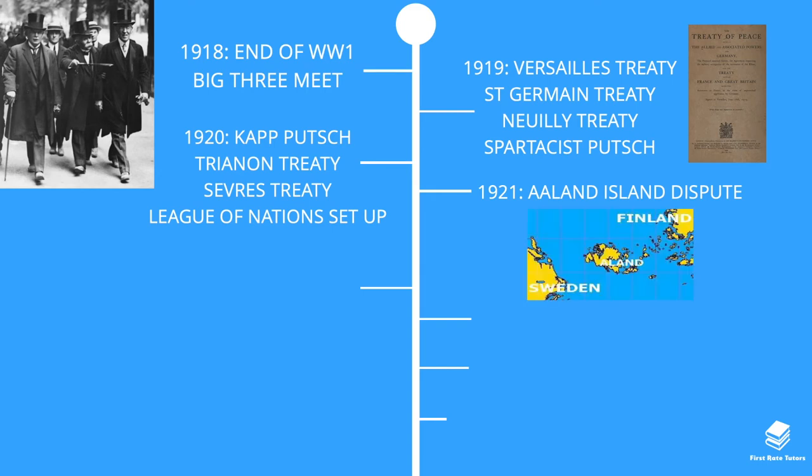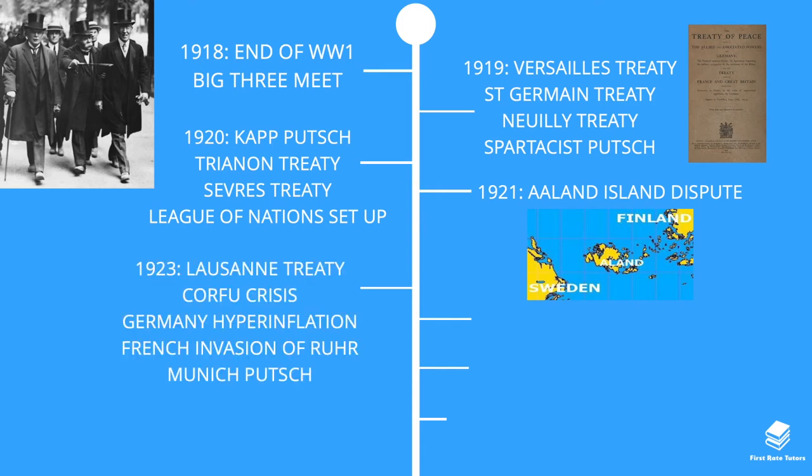In 1921 there was the Aaland Islands dispute, which was essentially the first dispute successfully resolved by the League of Nations. This was a dispute over a series of islands which were close to both Finland and Sweden.